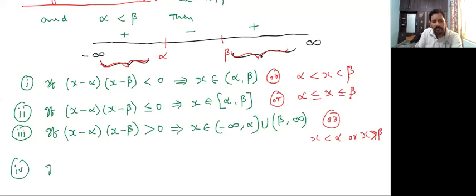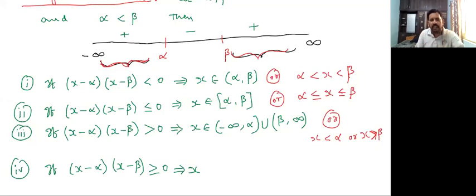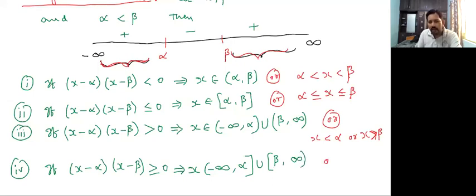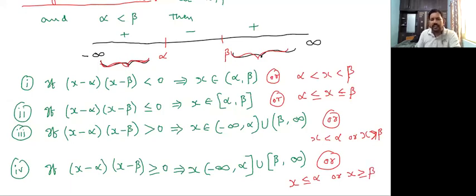Last case: if (x minus alpha) into (x minus beta) is greater than or equal to zero. Whenever there is infinite, write open bracket only because infinite is not an exact number, it is a large number. So the answer is: x belongs to (minus infinite, alpha] union [beta, infinite). Or another way: x less than or equal to alpha, or x greater than or equal to beta.